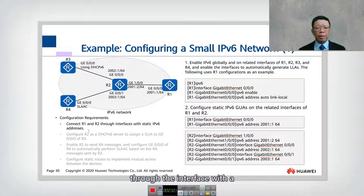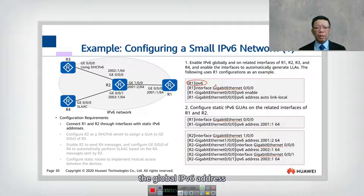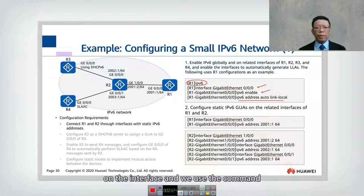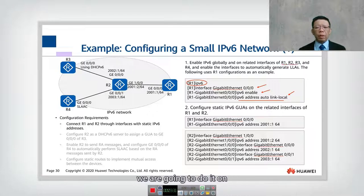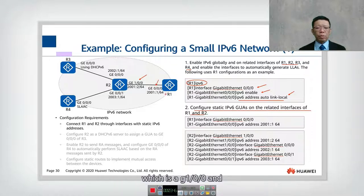Step 1: Enable IPv6 globally on all routers. The first step is to enable global IPv6, then go into the interface and enable IPv6 with 'ipv6 enable', and configure 'ipv6 address auto link-local'. We do this on all routers R1, R2, and R3.